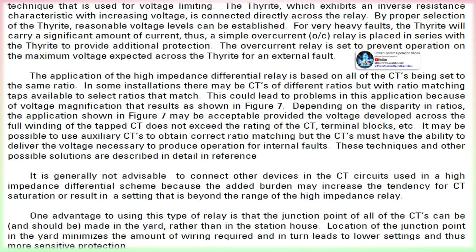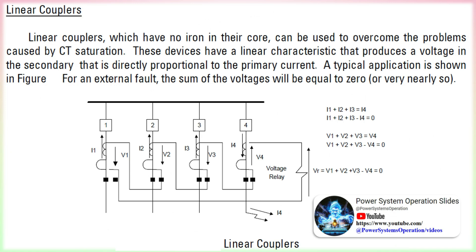The high impedance voltage-operated differential relay is applied on the assumption that the CT associated with the faulted feeder carries the total fault current and saturates completely. For that condition, the CT can be represented by a simple resistive component. The relay, connected across the junction point of the CTs, has an impedance much greater than the total resistance of the CT circuit, comprising CT resistance plus lead resistance. The voltage VR produced across the relay equals the drop in resistance resulting from the total fault current. Calculations are made for each CT circuit to determine the maximum possible voltage assuming total saturation, and the relay is then set greater than this voltage by a suitable margin.